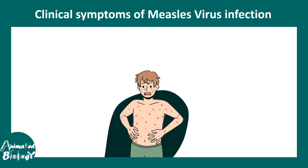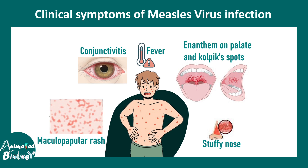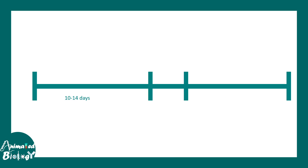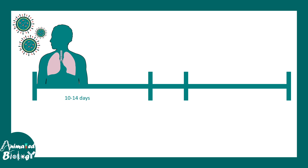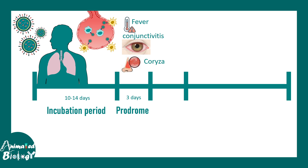Clinical symptoms of measles infection include fever, Koplik spots on the cheeks near the molars, stuffy nose (coryza), maculopapular rash, and conjunctivitis. These symptoms occur in sequential phases. After a 10–14 day incubation period, the prodrome phase begins with fever, conjunctivitis, coryza, and Koplik spots (enanthem) becoming visible.